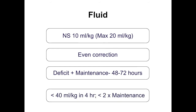Once fluid correction is calculated, ensure you are not giving more than 40 ml/kg in 4 hours and total correction should not exceed twice maintenance. For smaller children, use per-kg body weight for maintenance calculation. For children over 40-50 kg, use a body surface area-based calculation of 1.5 L/m²/day, which is more appropriate.